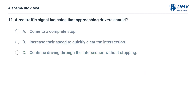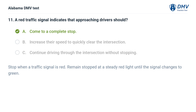A red traffic signal indicates that approaching drivers should: A. Come to a complete stop. B. Increase their speed to quickly clear the intersection. C. Continue driving through the intersection without stopping. Correct answer: A. Come to a complete stop. Stop when a traffic signal is red and remain stopped until the signal changes to green.